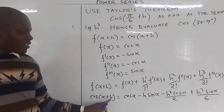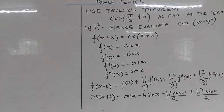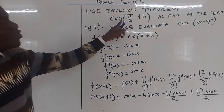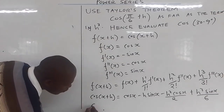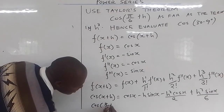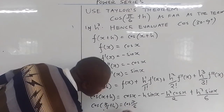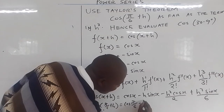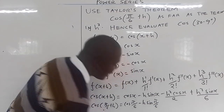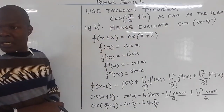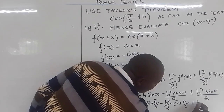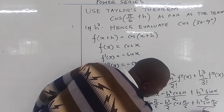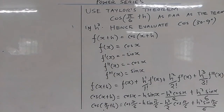This is an expansion of cos(x + h). But they don't need an expansion of cos(x + h) — they need an expansion of cos(π/6 + h). Meaning where there is x, you put π/6. So the expansion of cos(π/6 + h) is: cos(π/6) minus h·sin(π/6) minus h²·cos(π/6)/2 plus h³·sin(π/6)/6.